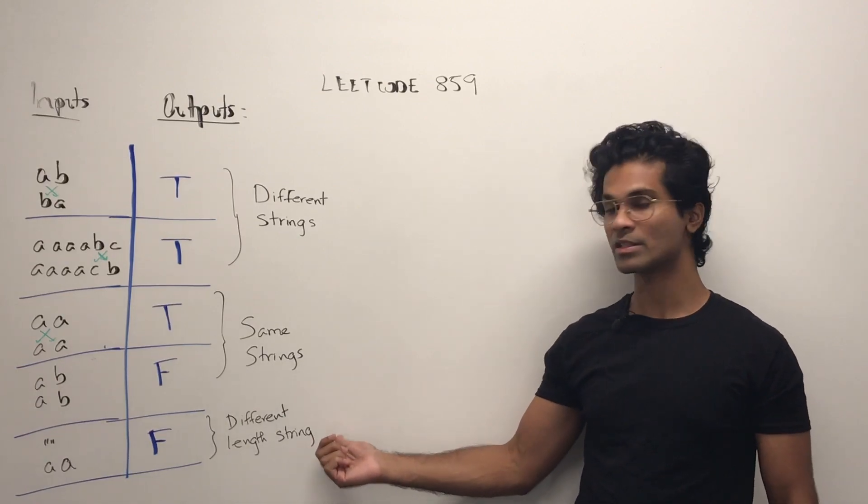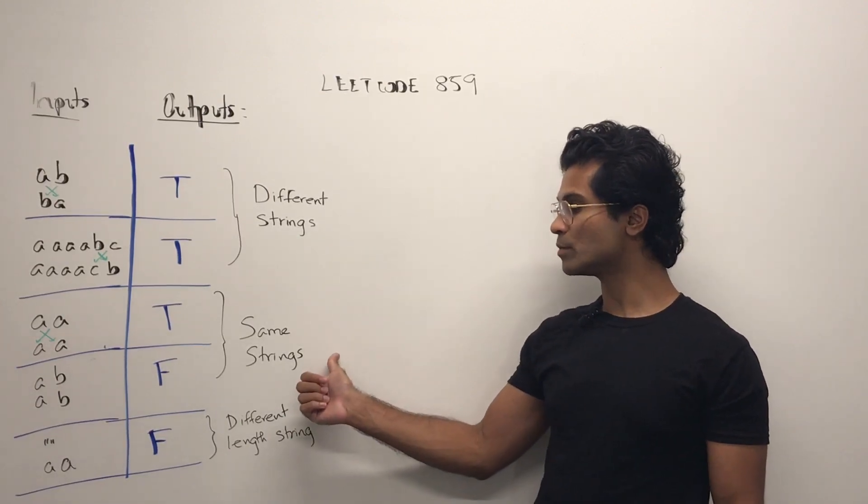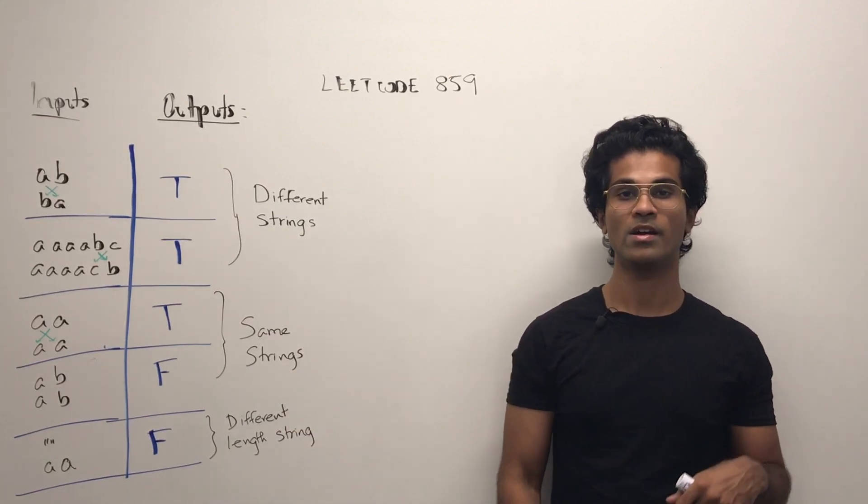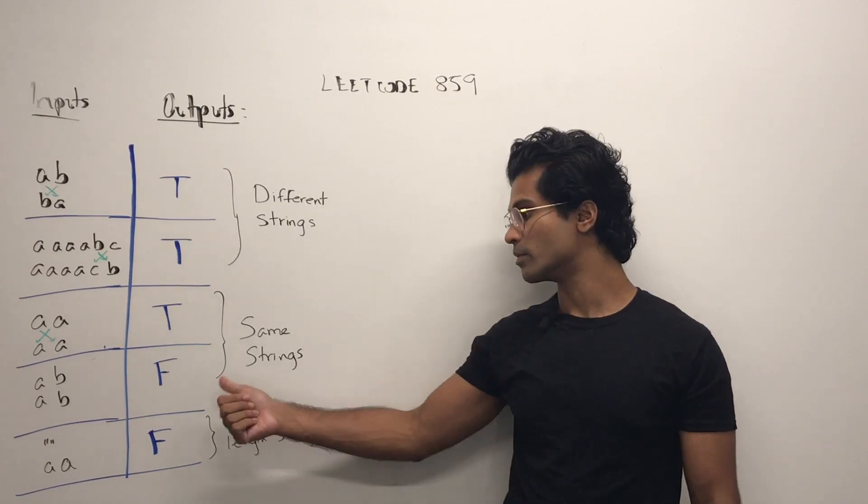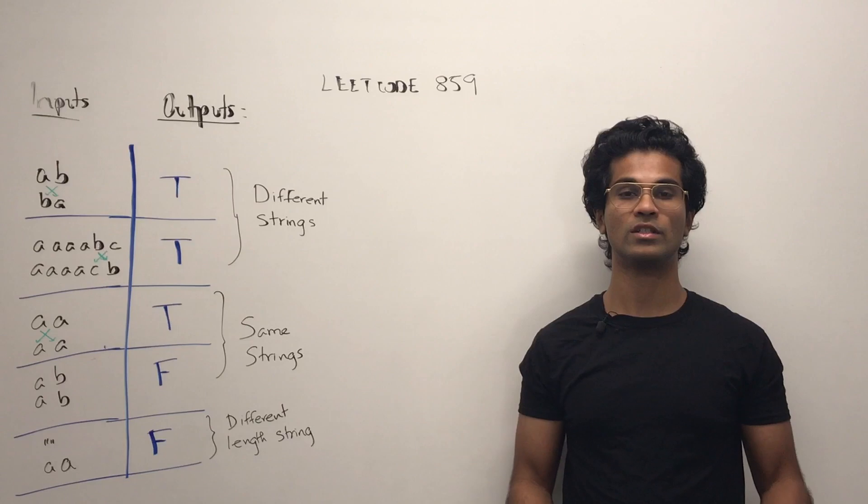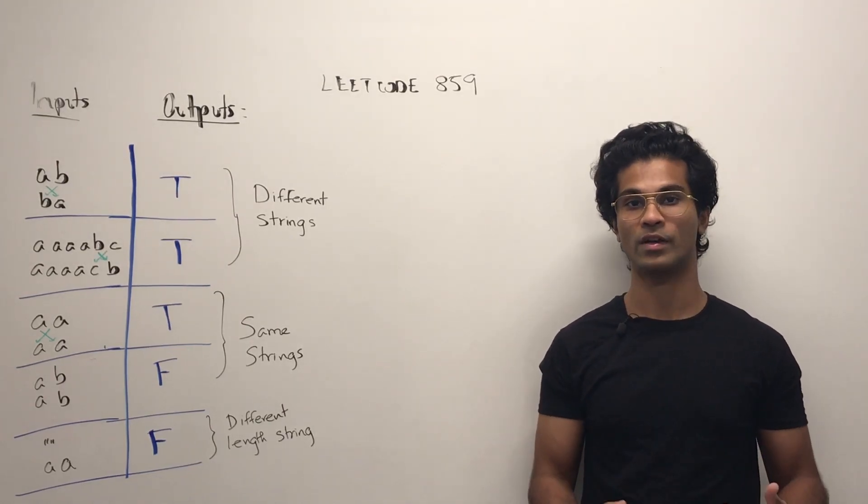If we have different length strings we're always going to have an output of false. If we have the same strings but we can have a duplicate letter then we have output of true. Otherwise it's going to be false. So here A is duplicated so all we need to see is at least one character which has a count greater than one.